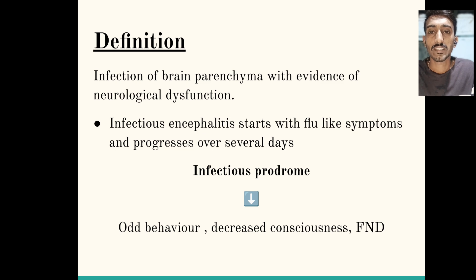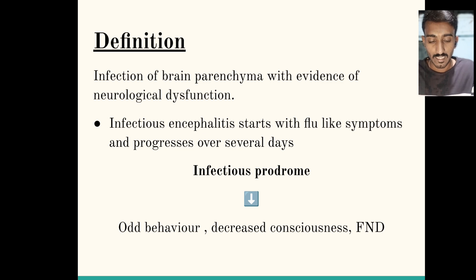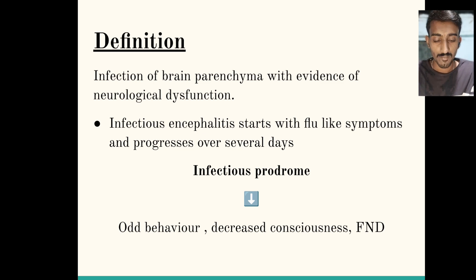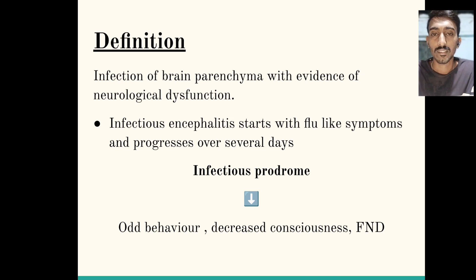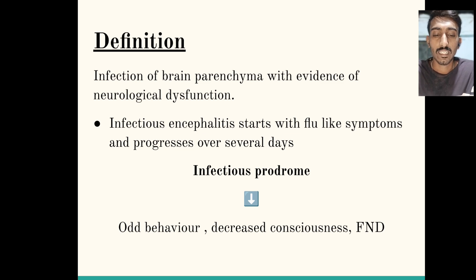This initial phase is called the infectious prodrome. The infectious prodrome includes history of increased temperature, rashes, lymphadenopathy, and being sick for a few days. If these are all present, that is called the infectious prodrome, and it will lead to odd behavior, decreased consciousness, and focal neural deficit in the patient.